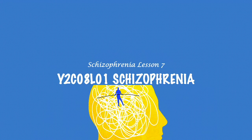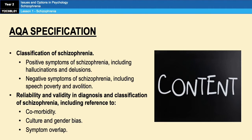Hello and welcome to another brief A-level psychology video. Today we're going to be looking at Schizophrenia Lesson 1. This is the content we are going to cover as per the AQA spec. We need to know about the classification of schizophrenia — what it is, what the symptoms are, and how it is diagnosed.